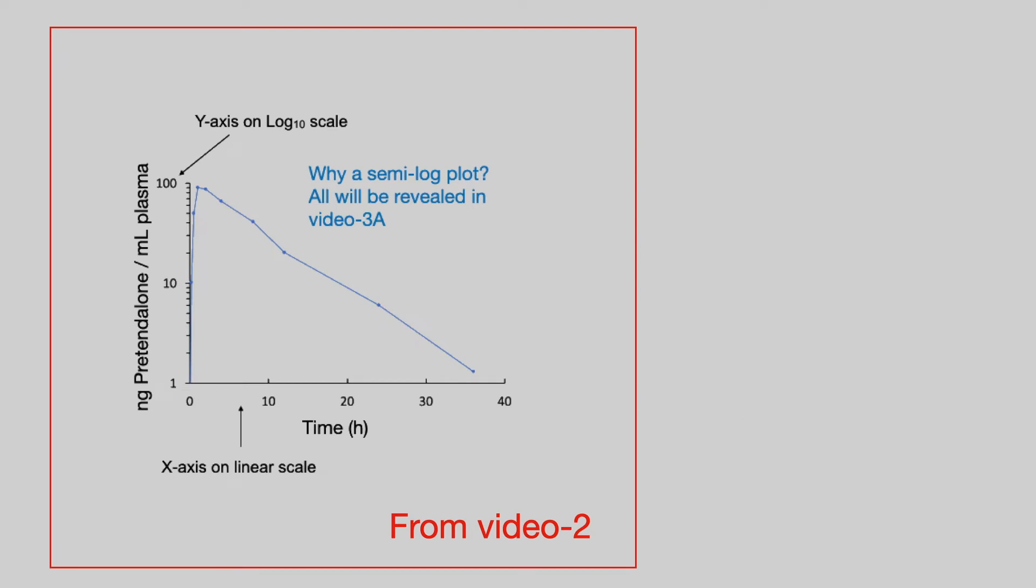You will remember this plot from video 2. It is the oral dose of pretendalone on a semi-log plot. And I said in video 2, the reason why we use a semi-log plot will be revealed in video 3a. Well, we are now in video 3a. And the reason should be obvious that a straight line on the semi-log plot shows that elimination is by first order.